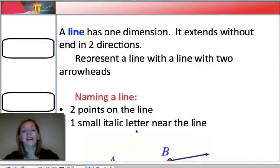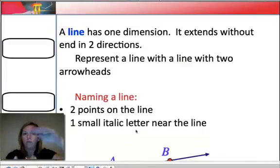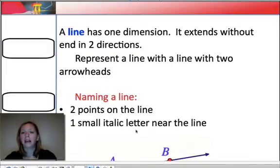Okay, the next undefined term is a line. We say that a line has one dimension. It has one dimension because it extends in two directions. So it has a length, that's its dimension, but it has no width, no height.